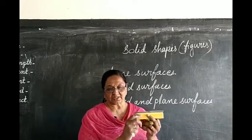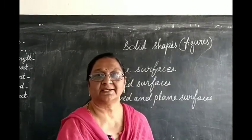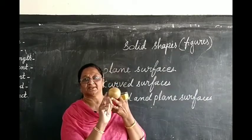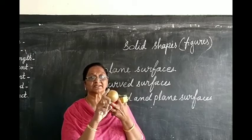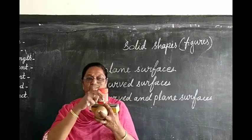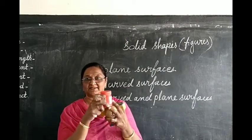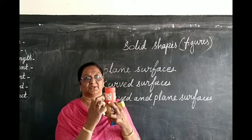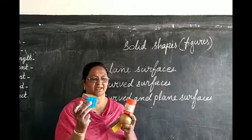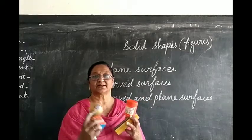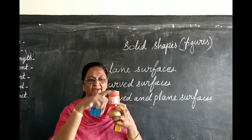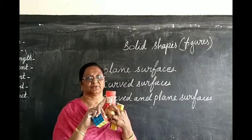Some figures are having only curved surface. See here the round shapes, you can see the curved shapes. This is having only curved surface. And in this you can see both together — the top and bottom are plain, and on this side you can see it is a curved surface. So three types: plain surface, only curved surface, and plain plus curved surface.